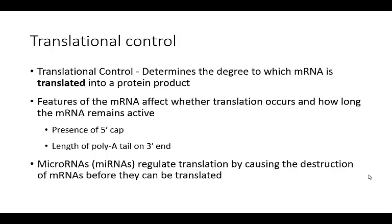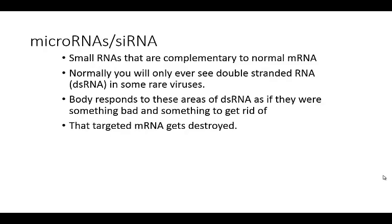Another relatively new area of study are microRNAs, or miRNAs. They can also regulate translation by causing destruction of mRNAs before they can even be translated. These microRNAs — also called siRNAs, among other names — are small RNAs that are complementary to normal mRNA, causing that region to become double-stranded. Normally, double-stranded RNA only appears when there's a problem, such as in rare viruses that have double-stranded RNA as their genetic material. The body responds to double-stranded RNA as something bad to get rid of, and that targeted mRNA gets destroyed.